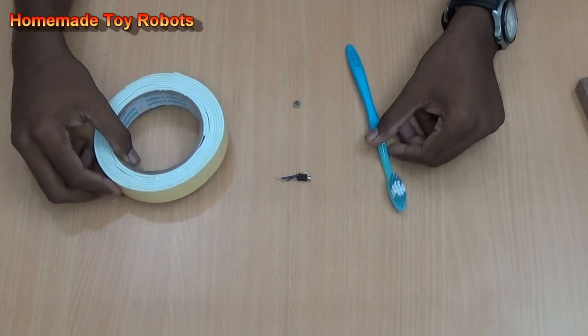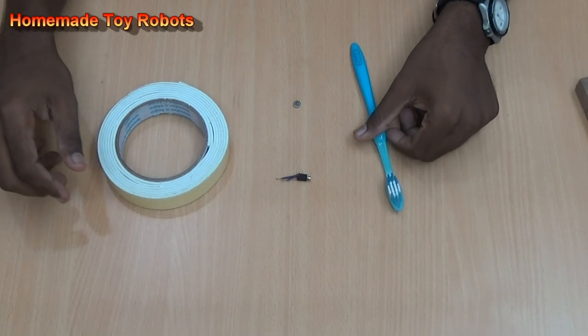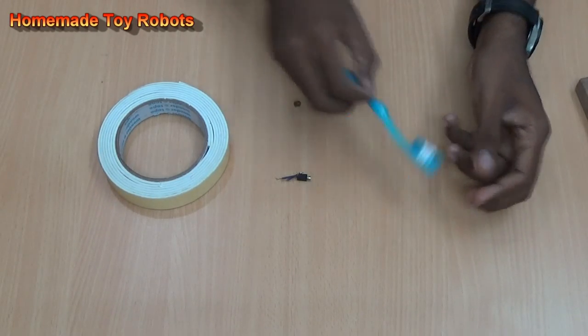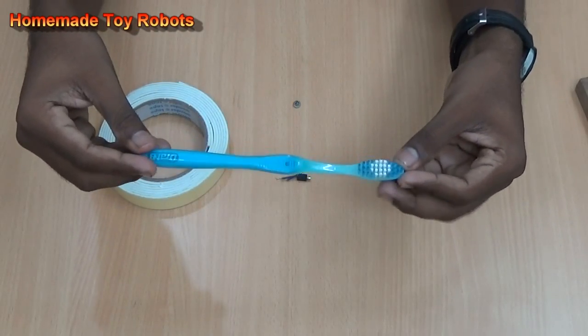Hi friends, now I am going to build a little bristle bot. The required things are a toothbrush. For better result, get a new one.